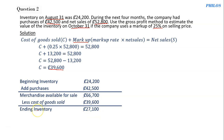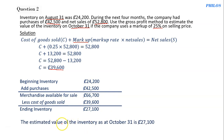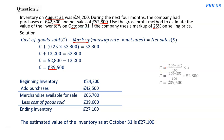So 27,100 is the ending inventory. Some questions can give you the cost of goods sold directly, so you just go straight to the ending inventory calculation. We conclude that the estimated value of inventory as at October 31st is 27,100. Another formula for finding cost of goods sold is: (100 minus markup rate) divided by 100, times net sales.